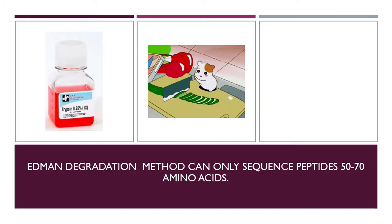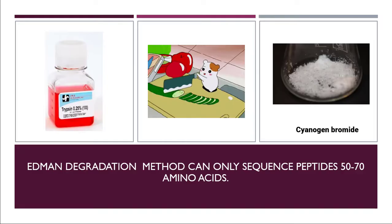For that, we will either add trypsin or cyanogen bromide in the solution. In both cases, it will cut the polypeptide chain into small pieces.